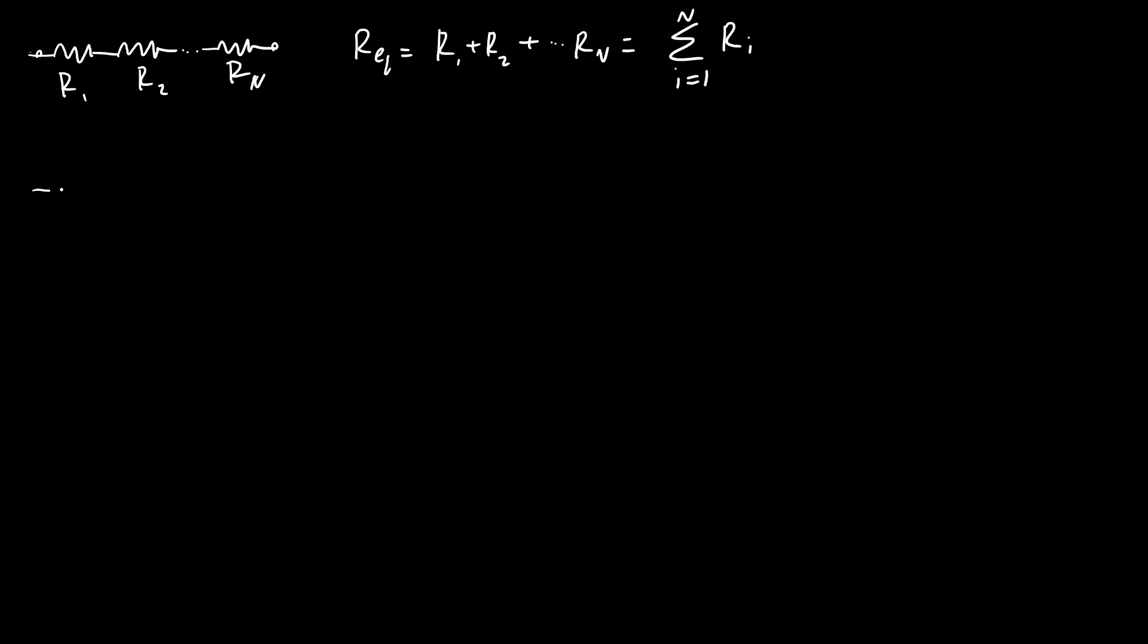If you have resistors connected in parallel, again, for a network of resistors going from R1, R2, up to Rn, the equivalent resistance between those endpoints adds inversely. So 1 over Req equals 1 over R1 plus 1 over R2 plus up to 1 over Rn. Using summation notation, that is sum from i equals 1 to n of 1 over Ri.